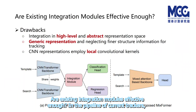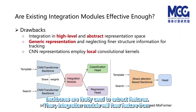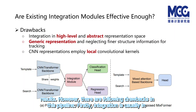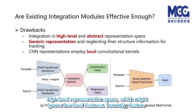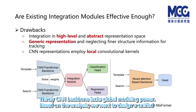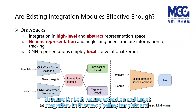Are existing integration modules effective enough? In the pipeline of current trackers, backbones are first used to extract features, then the integration module fuses features from the template and search frame, and finally a prediction head processes the fused feature to get results. However, there are following drawbacks: first, integration is usually in a high-level representation space, which might ignore low-level features. Second, feature extractors might not capture target-specific information and perform structured integration. Third, CNN backbones lack global modeling power.